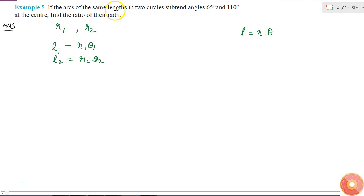Now what is given: the arcs are of same length. So l1 is equal to l2, so r1 theta 1 is equal to r2 theta 2, where theta are in radians because this equation is valid when theta is in radians.